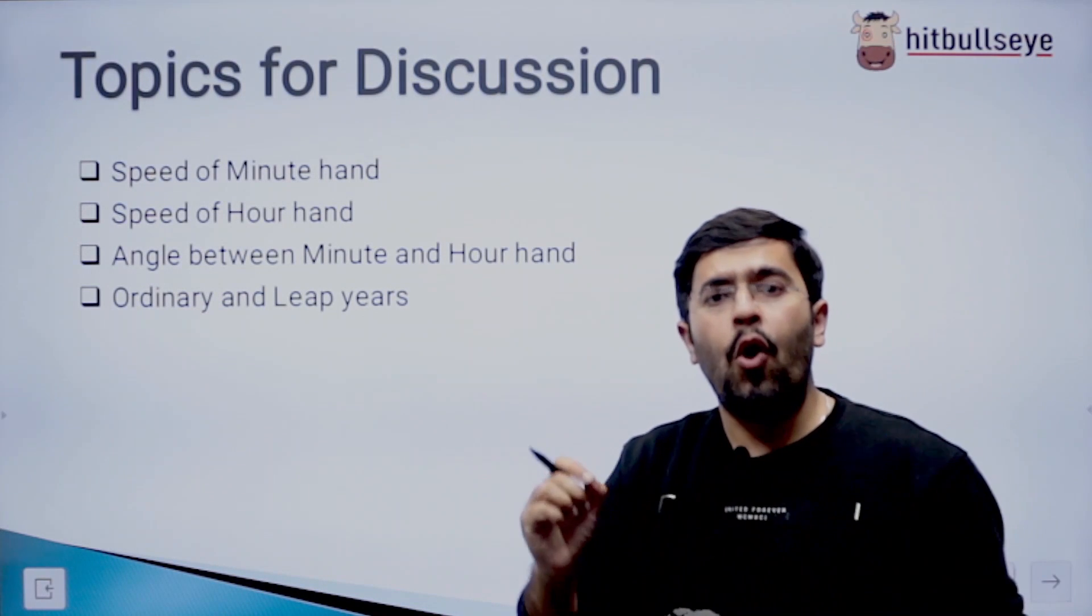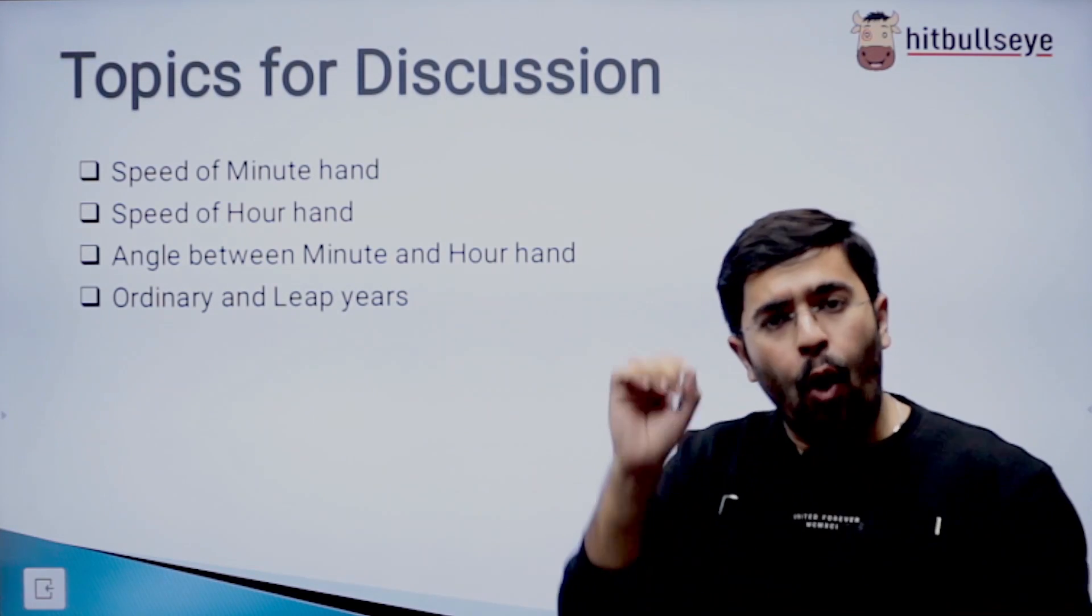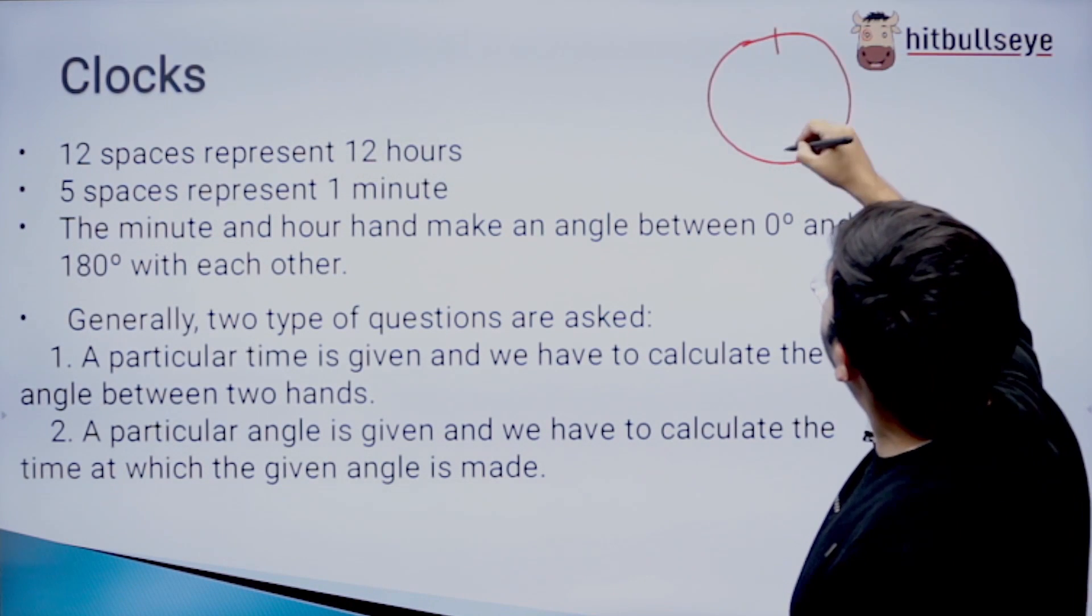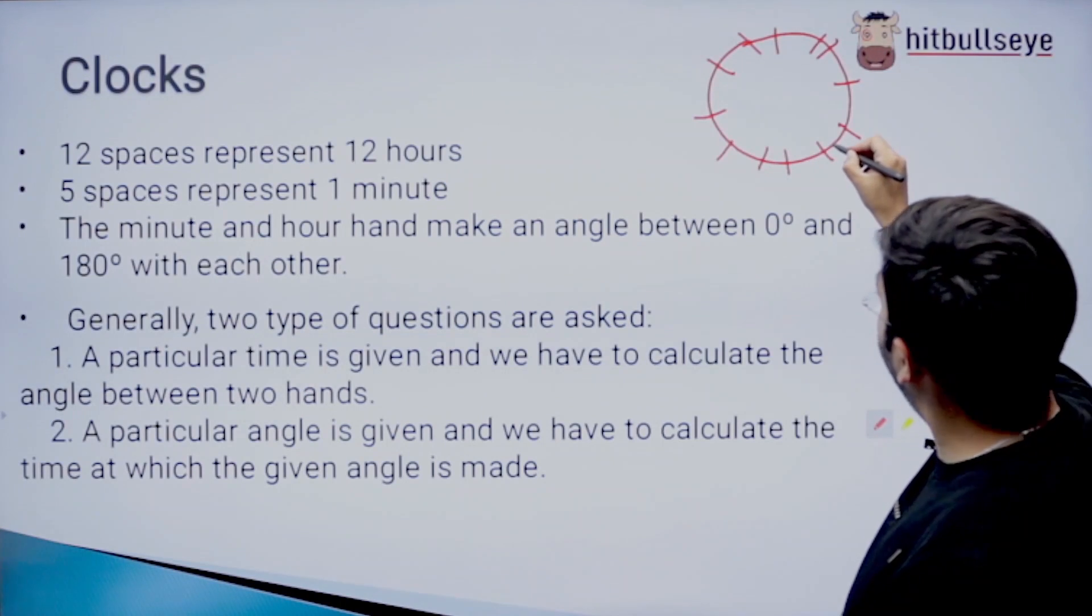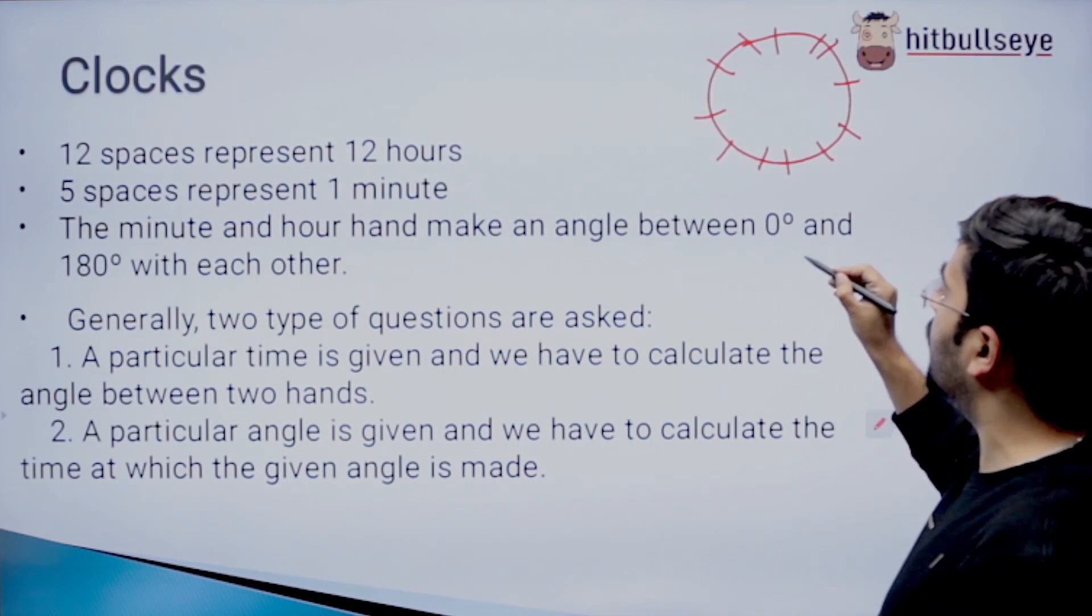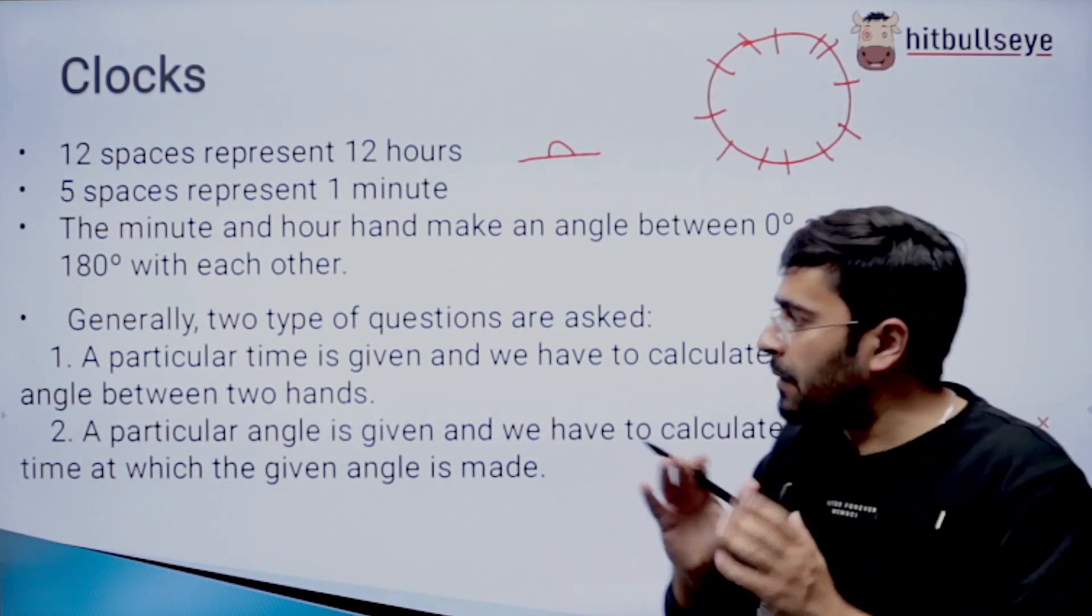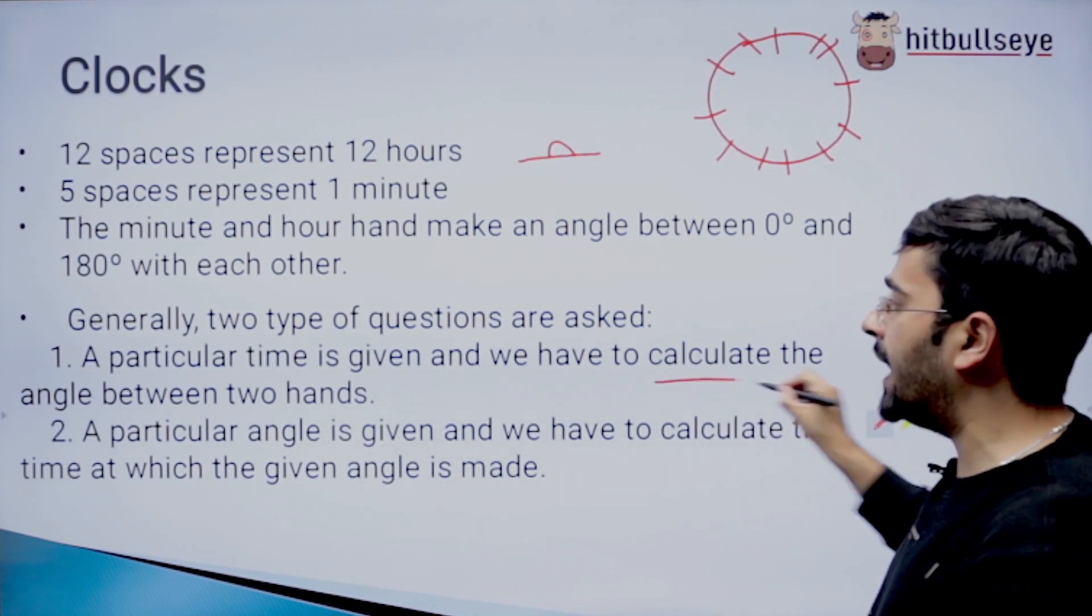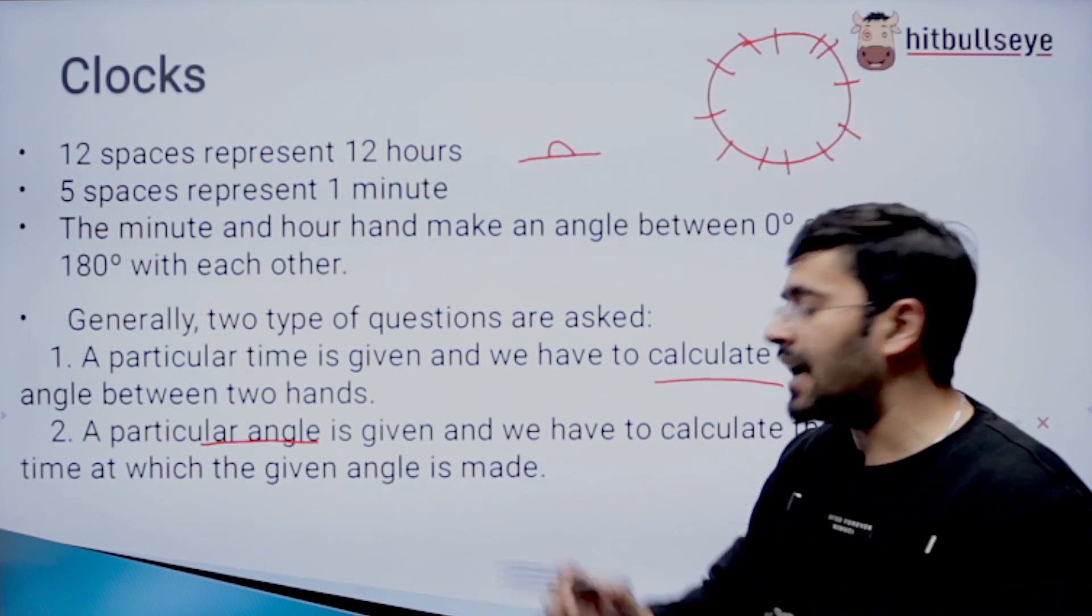We are going to talk on four topics: the speed of a minute hand, the speed of hour hand, the angle between both of them, and what are ordinary and leap years. At the beginning, let's talk about the clocks. Whenever we talk about a clock, there are 12 spaces that signify 12 hours, and for every 5 spaces in between, the 2 spaces signify 1 minute. The minute and hour hand make an angle between 0 degrees and 180 degrees varying to different amounts. Generally, two types of questions are asked in this topic. A particular time is given and we have to calculate the angle between the two hands. And a particular angle is given and we have to calculate the time at which the given angle is made.